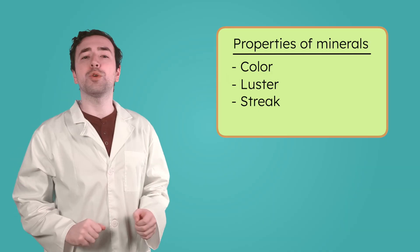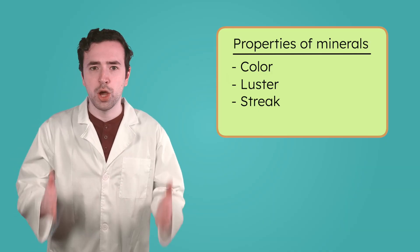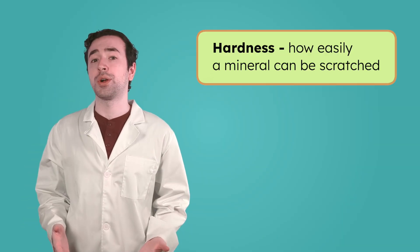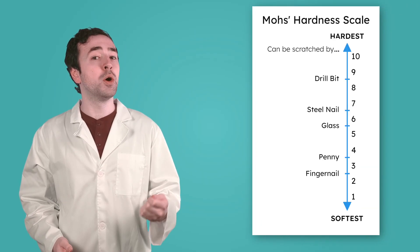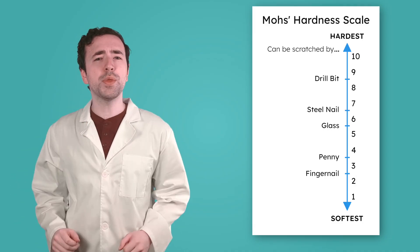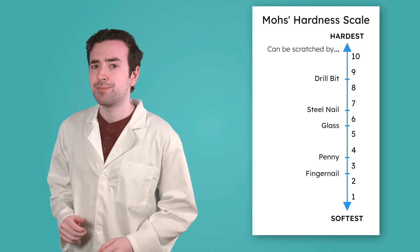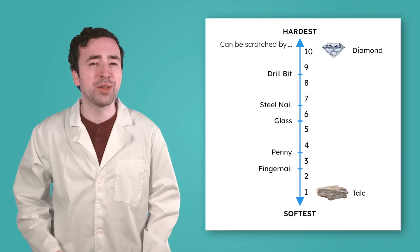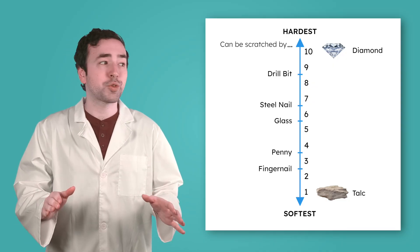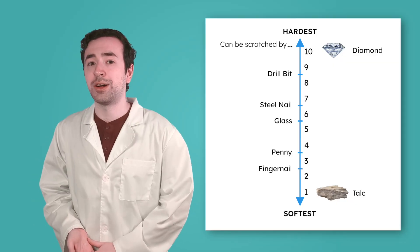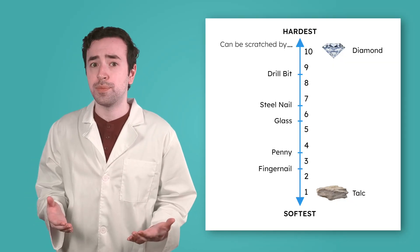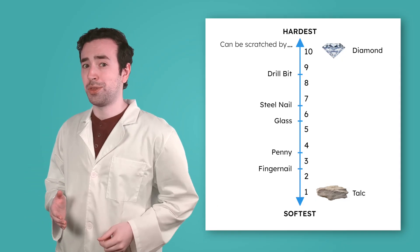Luckily, there's one more mineral property we can use to figure this out: hardness. Hardness is how easily a mineral can be scratched. To test hardness, we use a special scale called the Mohs Hardness Scale. It ranks minerals from 1 to 10. At a 10 on the Mohs scale, diamonds are the hardest mineral — they're so hard they can scratch just about anything. On the other end of the scale, the softest mineral is talc, with a hardness of just one. Talc is so soft you can scratch it with your fingernail.